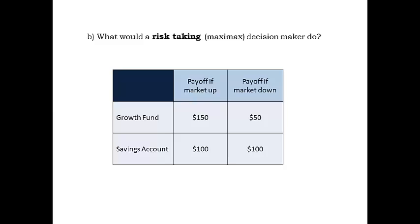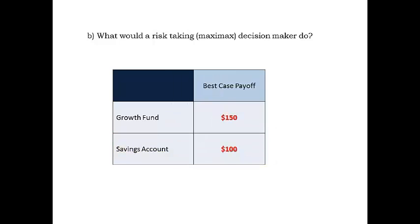Next, consider a risk taker instead. A risk taking decision maker looks at each decision alternative and focuses on the best case outcome. For the growth fund, the best outcome is $150. For the savings account, the best outcome is $100. Comparing the best case outcomes, the risk taking decision maker chooses the best of these. For our example, the growth fund is the choice with the best of the best payoff, or maxi-max for profit examples.